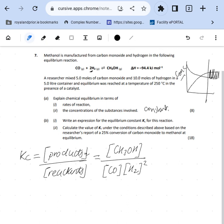Calculate the value of Kc described above based on the researcher's report of a 25% conversion. So that's that change. Now there's different ways you can do this. What I always do is I write down my equation - it's not cobalt, it's carbon monoxide.